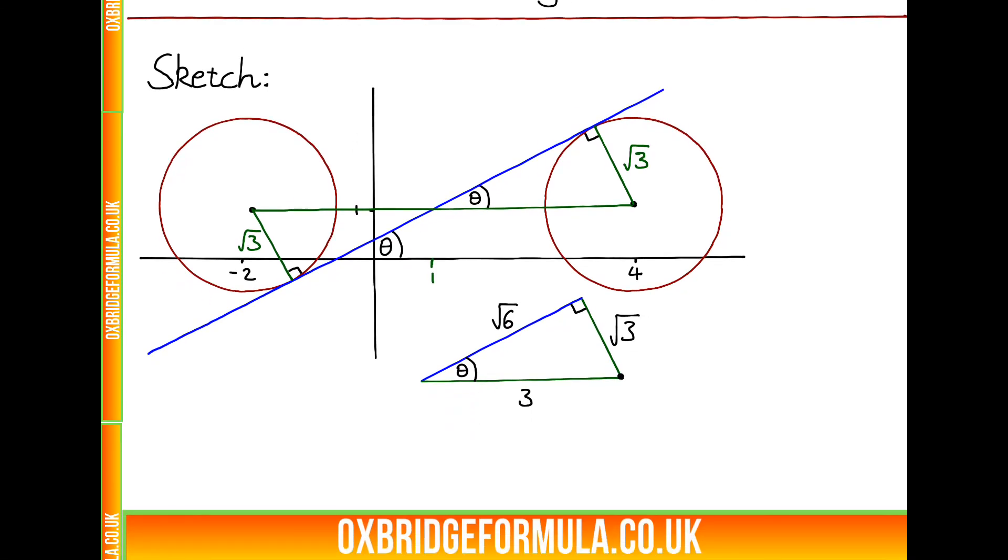So, therefore, tan theta is opposite over adjacent, is square root 3 over square root 6. And if we divide the top and the bottom of the fraction by square root 3, we see this is just the same as 1 divided by square root 2.